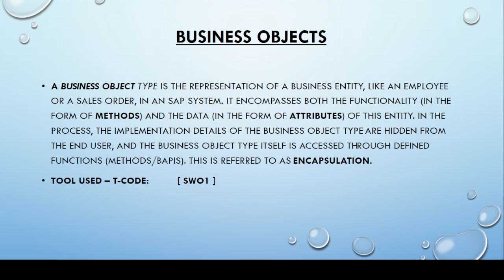An entity in SAP can be an employee, sales order, purchase order, or purchase requisition — we call these business objects. The implementation details of the business object type are hidden from the end user, and the business object type provides access to defined functions, methods, and BAPIs. Every business object can be accessed via some defined functions — that is, methods and BAPIs.